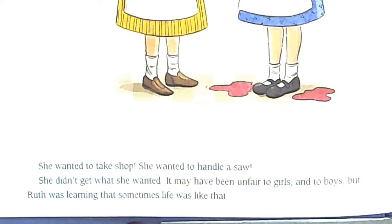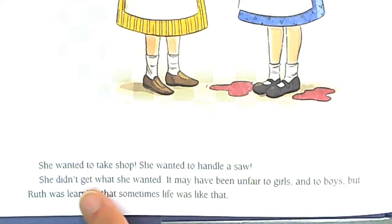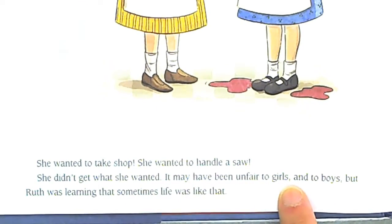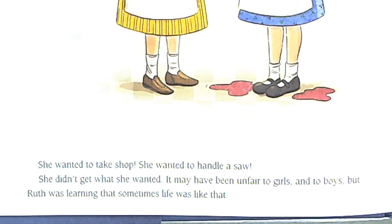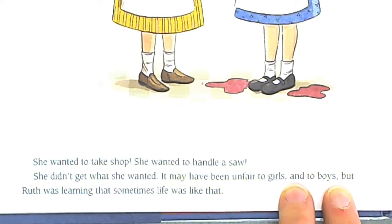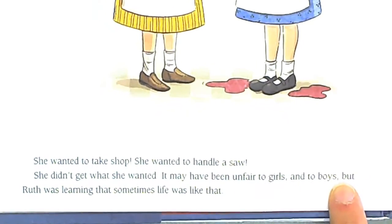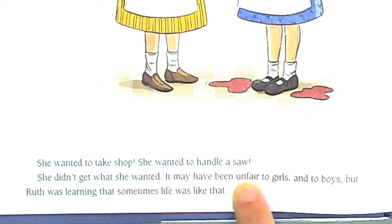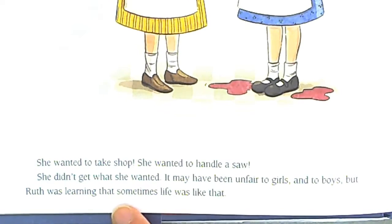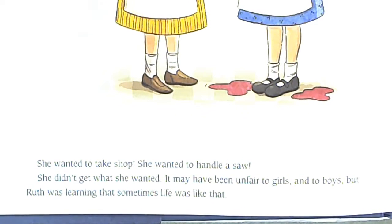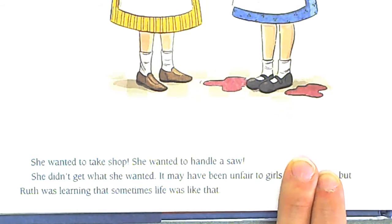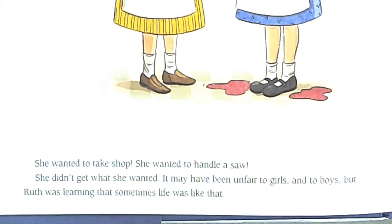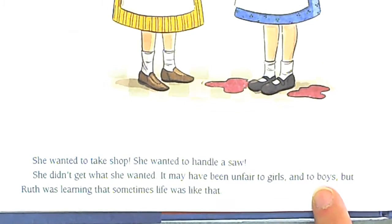Lower down on the page we see another one: 'She wanted to take shop. She wanted to handle a saw. But she didn't get what she wanted. It may have been unfair to girls, and to boys, but Ruth was learning that sometimes life was like that.' Do you see any commas? Remember, a comma is a big clue there might be an appositive. The phrase 'and to boys' is an appositive. One other thing about an appositive: you can take it out and the sentence will still make sense — 'It may have been unfair to girls, but Ruth was learning life was sometimes like that.' But it gives a little extra information — it's unfair to girls and boys.